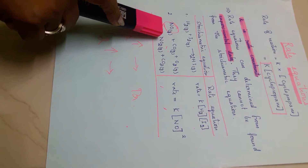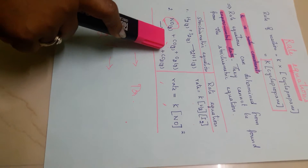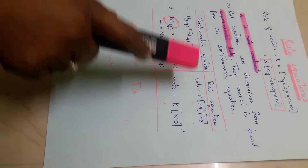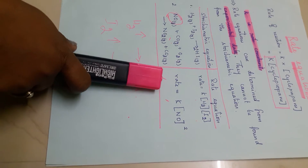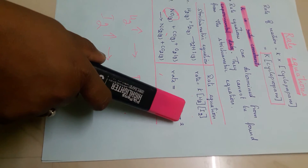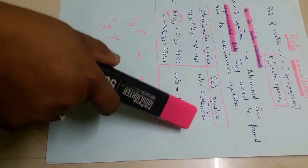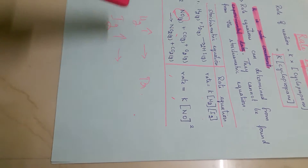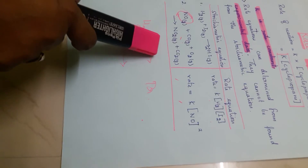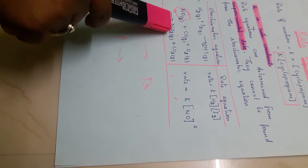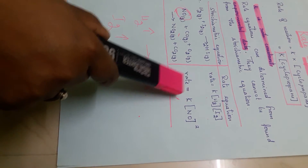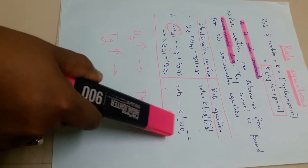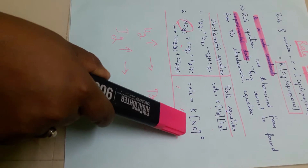But if you take this example — NO reacts with CO and oxygen, giving you NO₂ and CO₂ — you can see the difference. The rate equation here is K[NO]², but carbon monoxide and oxygen are not involved in the rate equation. This is a very good example. By using stoichiometry you cannot find the rate equation because here three reactants are present, but the rate equation mentions only one reactant.